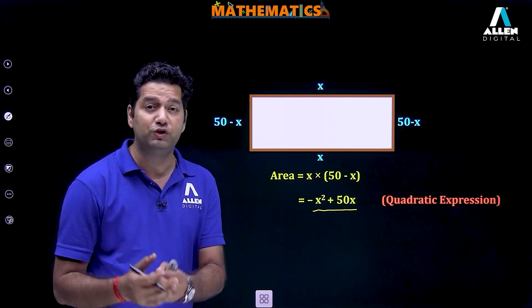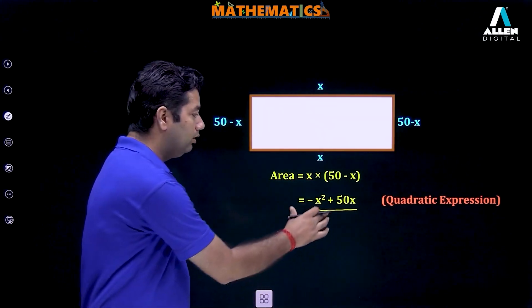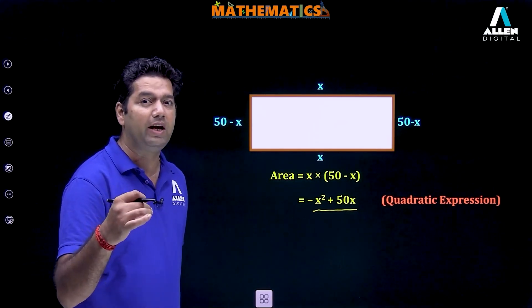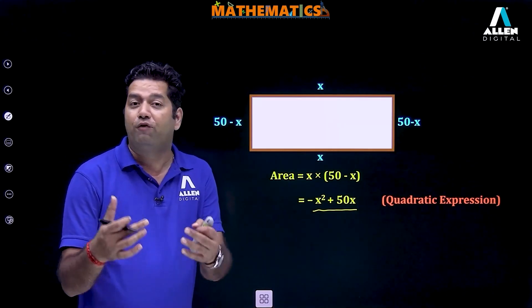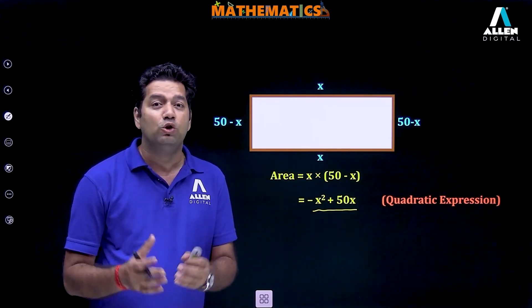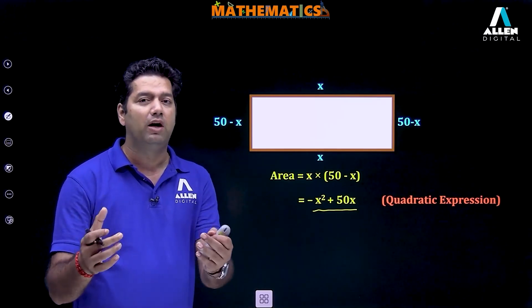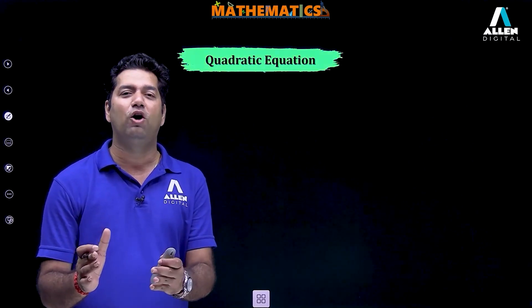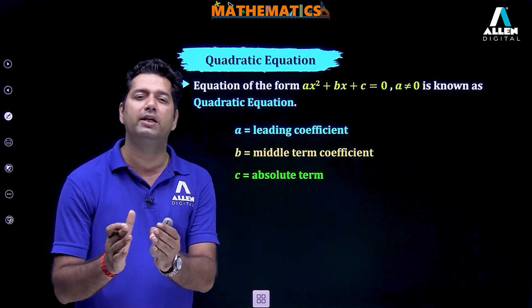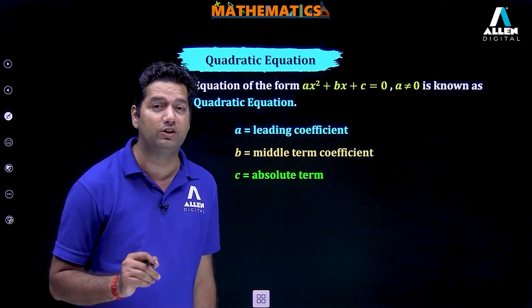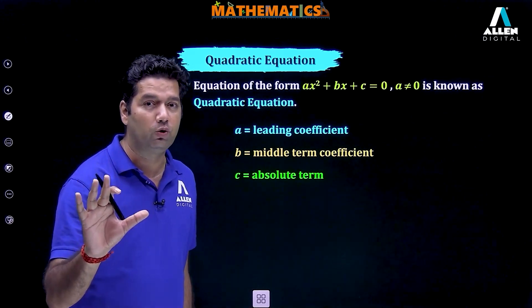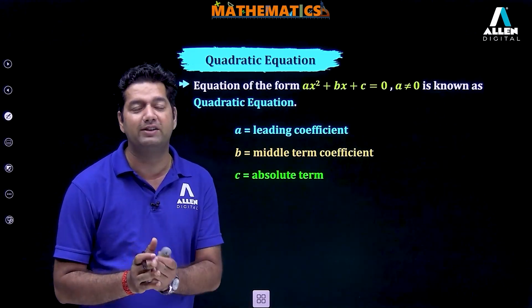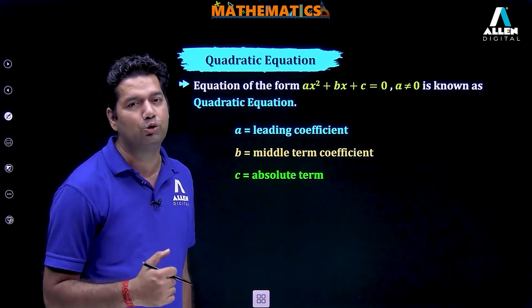By the different concepts we are going to learn in this chapter, we can calculate the value of x at which we can obtain or form the rectangle of maximum area. These are the basic concepts we are going to learn. Starting with quadratic equations: an equation of the form ax square plus bx plus c is equal to 0 is known as a quadratic equation, where a is not equal to 0. A is the leading coefficient, b is the coefficient of x, and c is known as the constant term or absolute term.